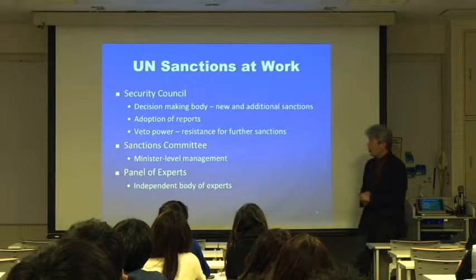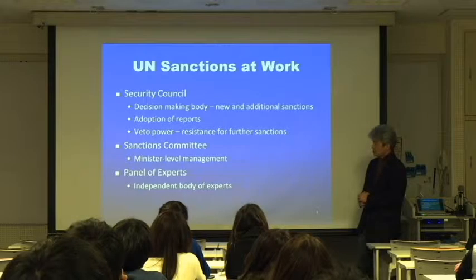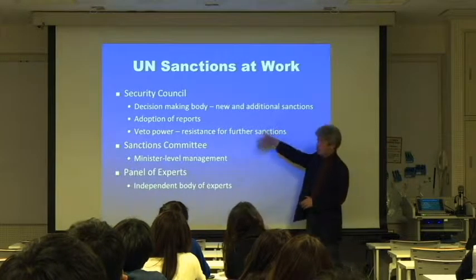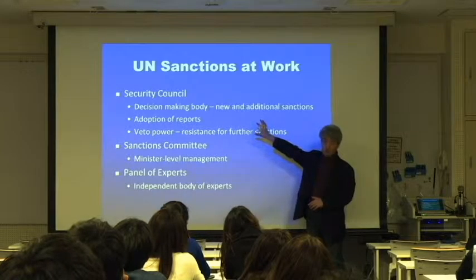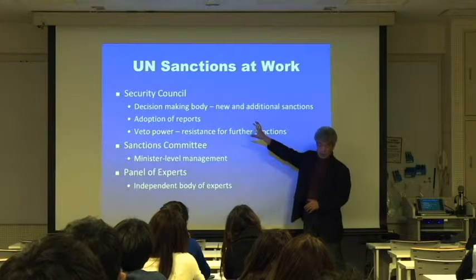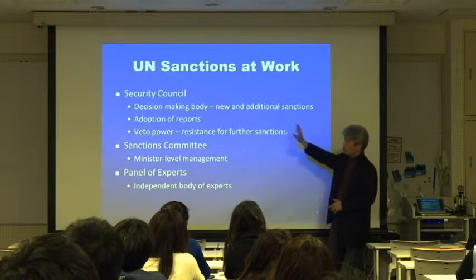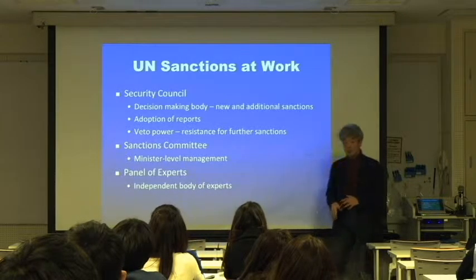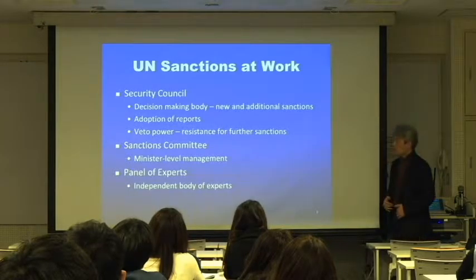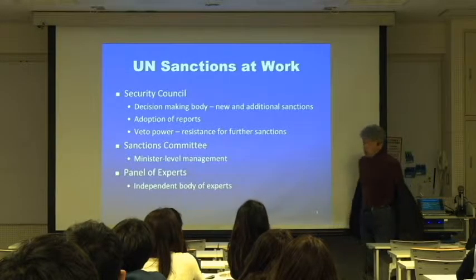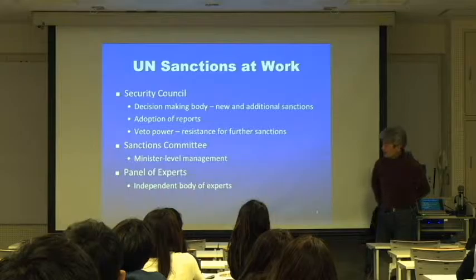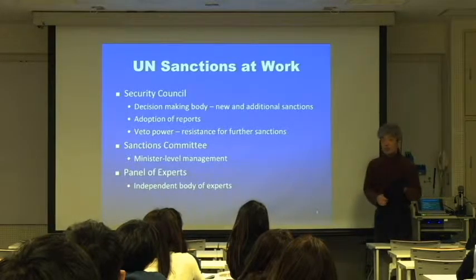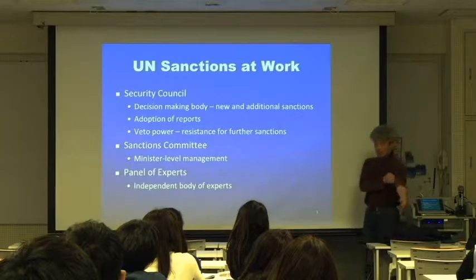How do UN sanctions work? There are three major organizations or bodies under the Security Council. The Security Council is the most powerful organ of the UN system, which has the power to make decisions binding on member states. If there is a decision by 15 member states — where the majority is 9, including the 5 permanent members: the United States, Russia, China, UK, and France — once the decisions are made, it binds all member states, because UN Charter Article 25 gives the Security Council's decisions legally binding power.